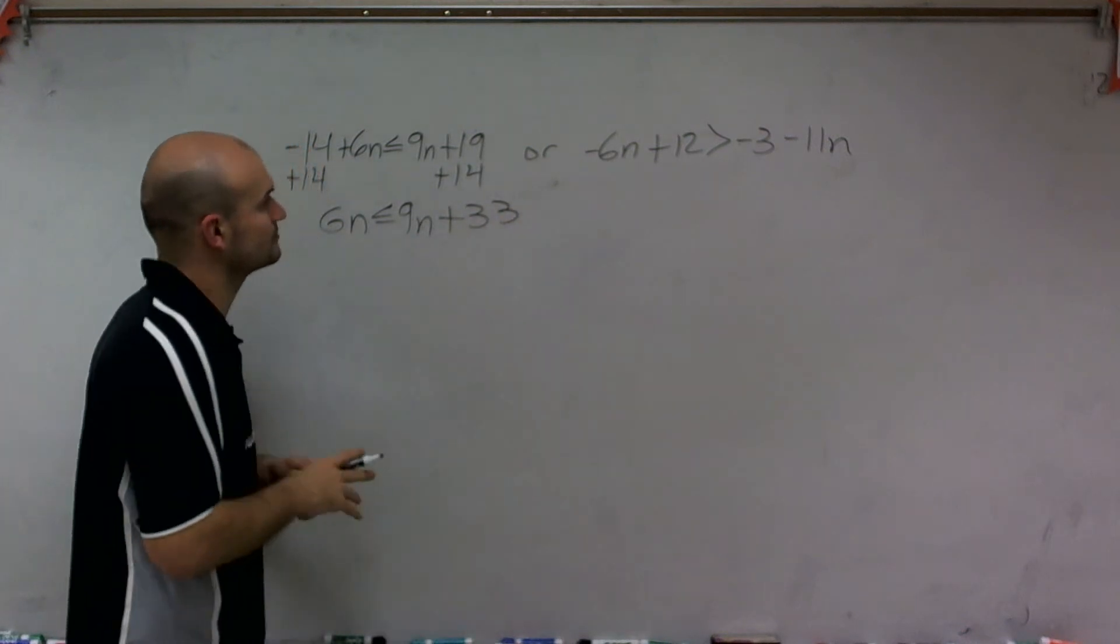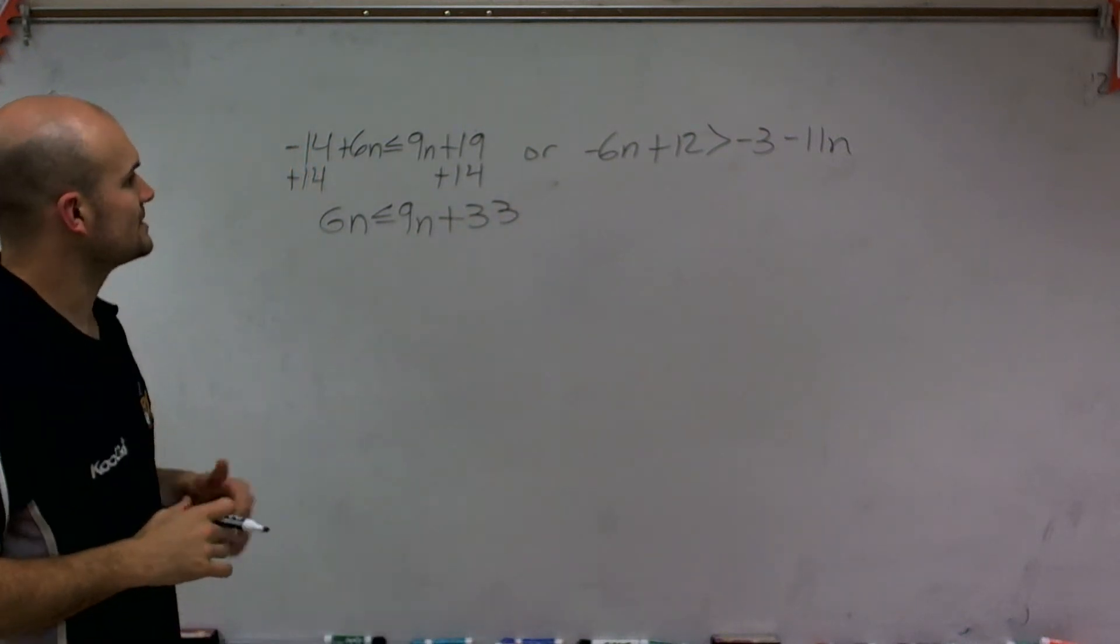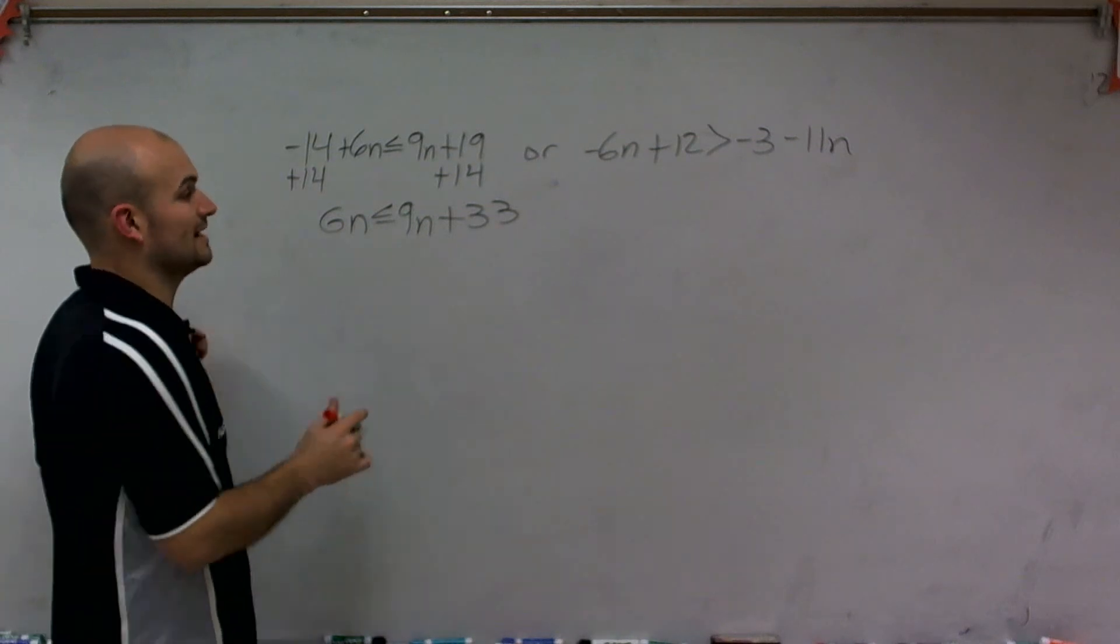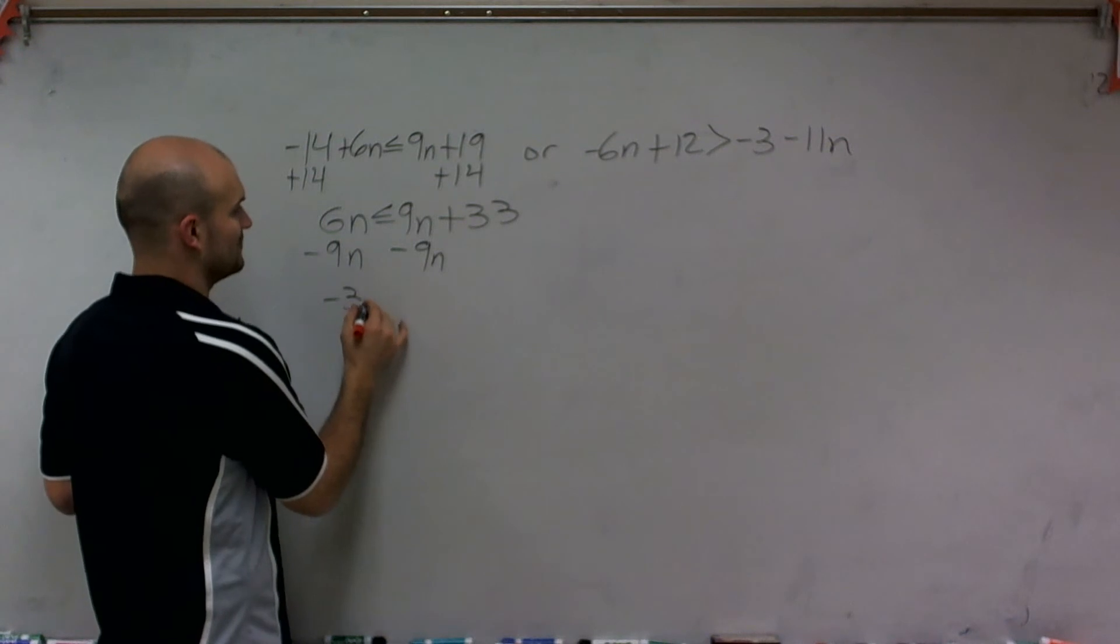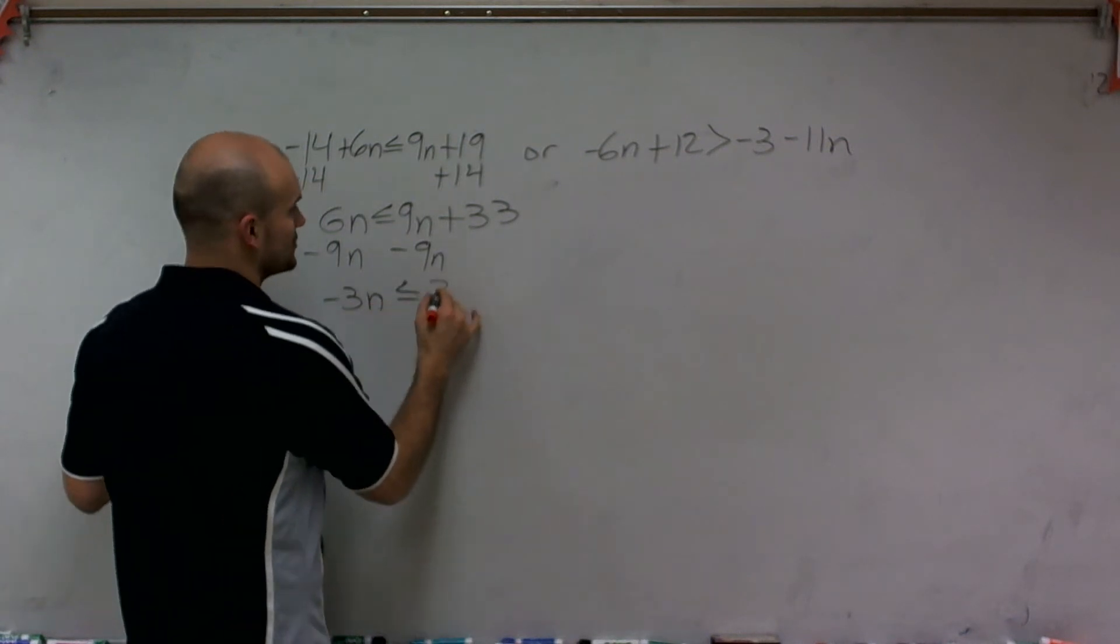Not 33. All right. Then the next thing is now I need to get all the n's to the other side. So I'll subtract 9n. Therefore, I'm left with a negative 3n is less than or equal to 33.